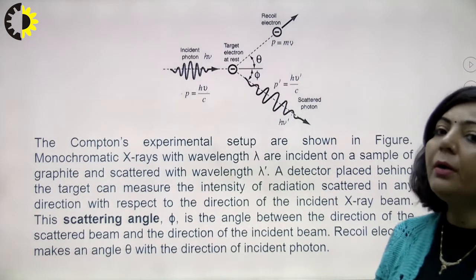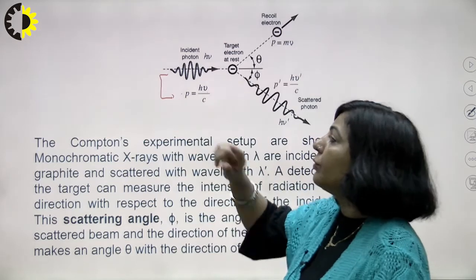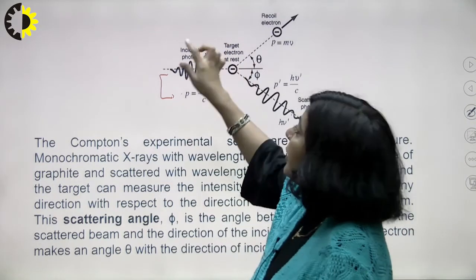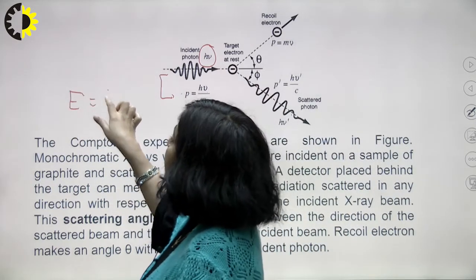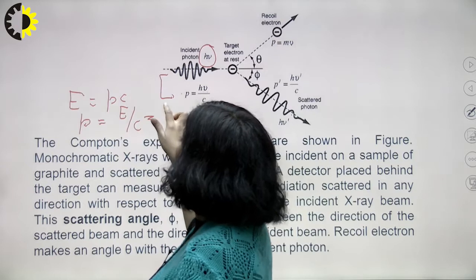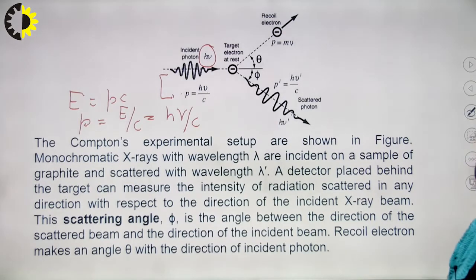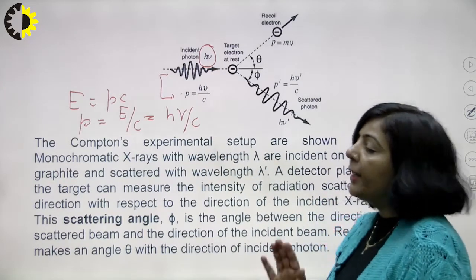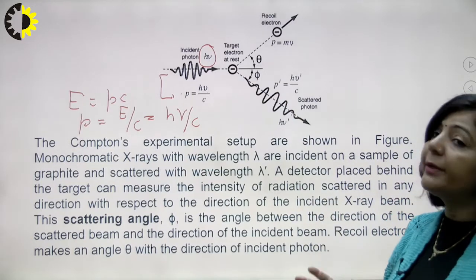As shown in the diagram, the incident photons are x-ray or gamma-ray photons. Let ν be the frequency of those photons; then hν is the energy. For a photon, since they are massless particles, E = pc, meaning the momentum of a photon equals E/c. Since energy is hν, the momentum of photons is hν/c.